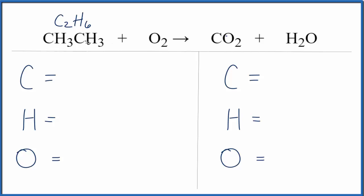But either way, if you use this here or this here, you're going to end up with the same coefficients once the equation's balanced. So let's add the atoms up on both sides of the equation. We have two carbons, we have three plus three, six hydrogens, and two oxygens.